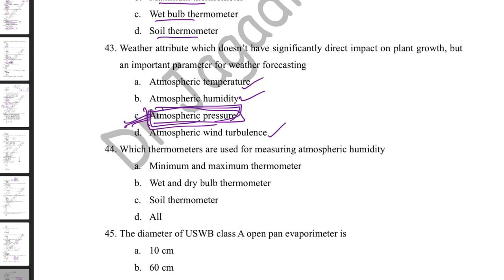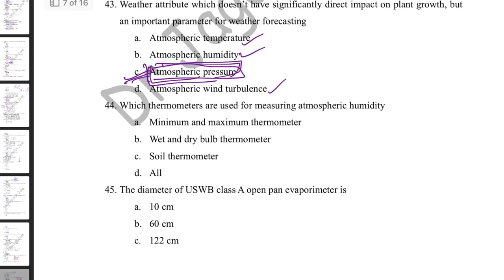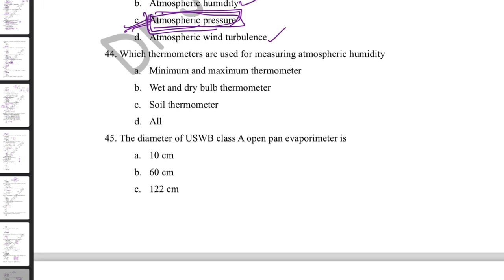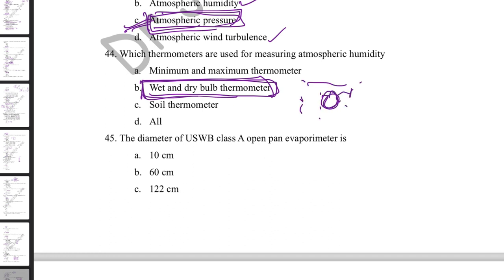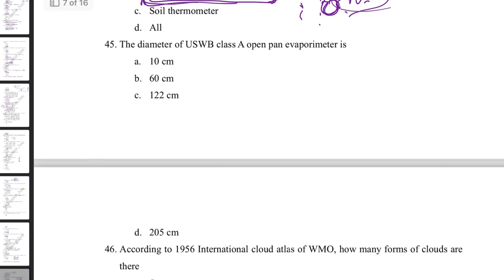Which thermometers are used for measuring atmospheric humidity? Inside the Stevenson screen, four types of thermometers are used: minimum thermometer, maximum thermometer, wet bulb thermometer, and dry bulb thermometer. Wet and dry bulb thermometers measure relative humidity — by recording both readings and consulting a relative humidity table, the actual relative humidity can be determined.